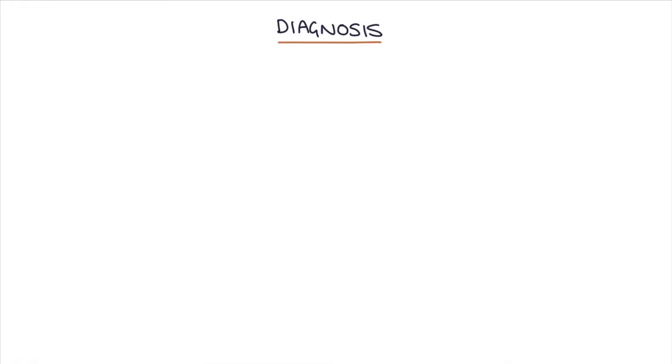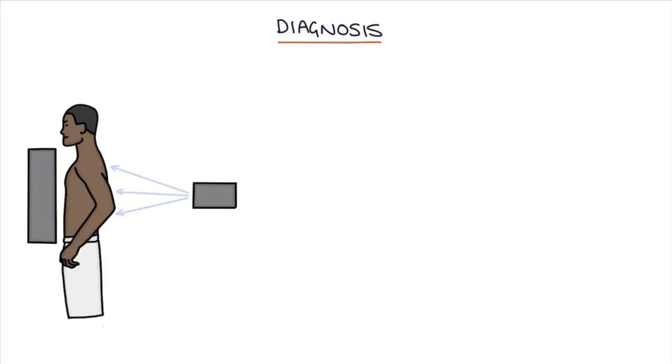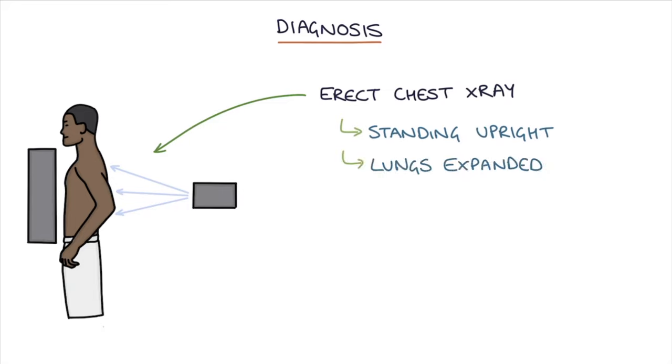The way to diagnose a pneumothorax is to use a chest x-ray. An erect chest x-ray is the investigation of choice for diagnosing a simple pneumothorax. By erect, we mean that we want the patient standing upright with their lungs fully expanded so we get a clear picture of the lung fields.